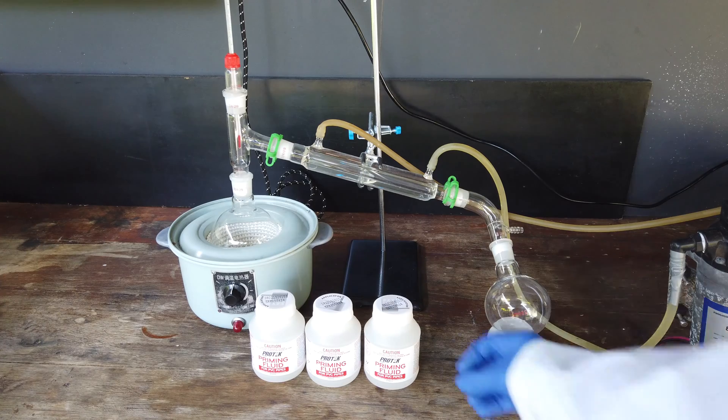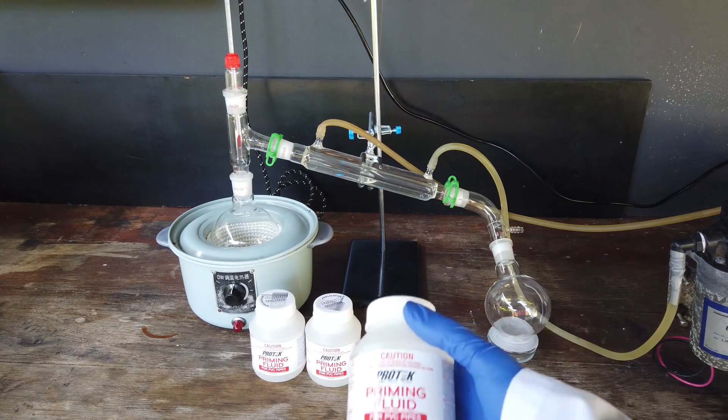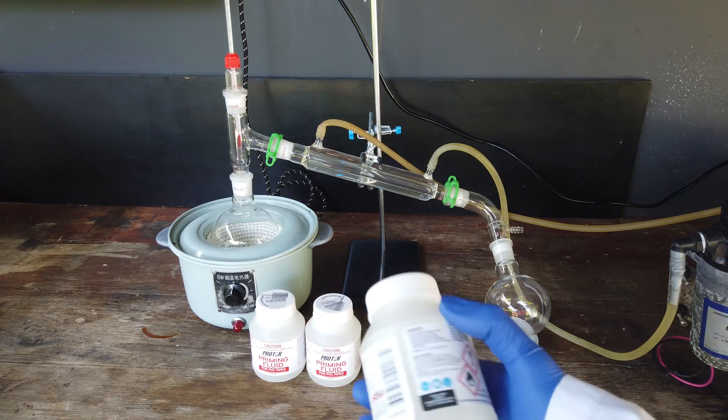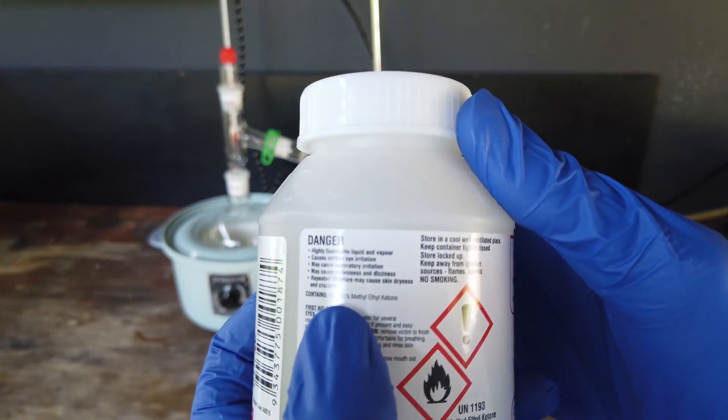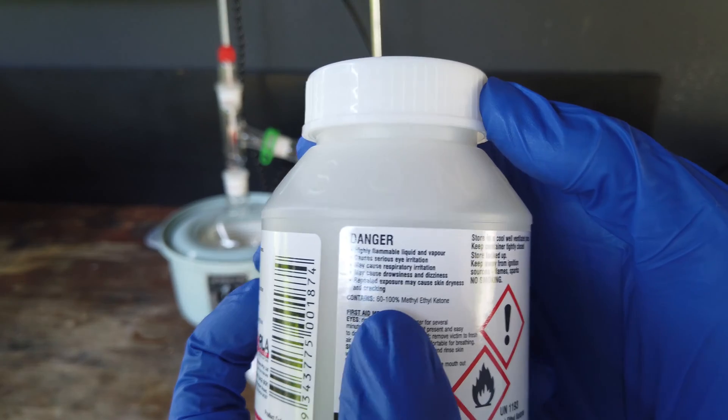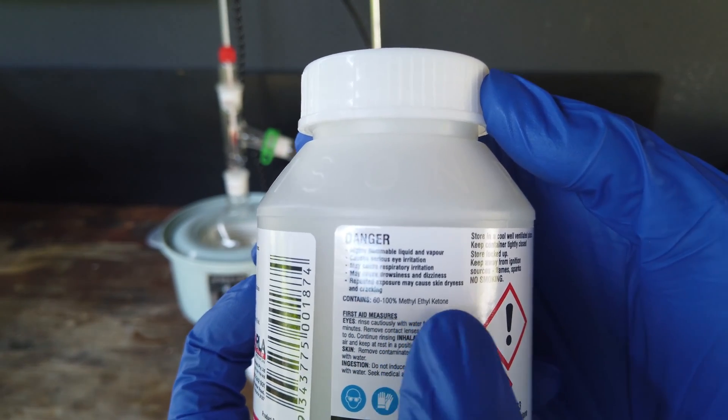Having a bit more of a search around, I was able to find PVC priming fluid, which apparently, according to the label, contains 60 to 100% methyl ethyl ketone.